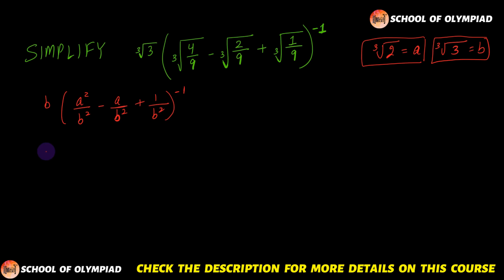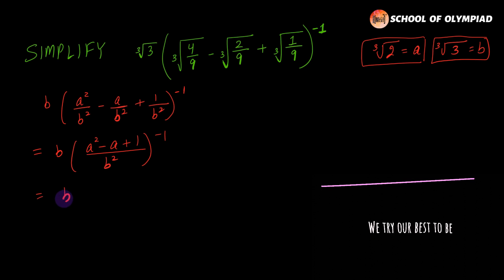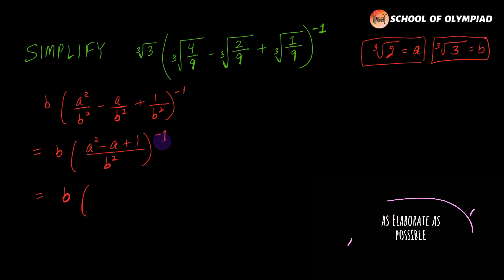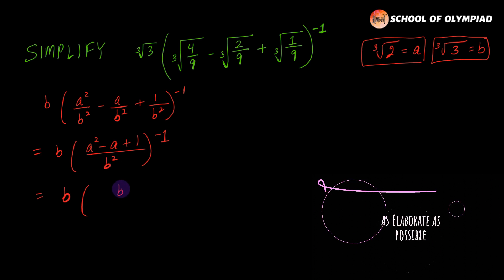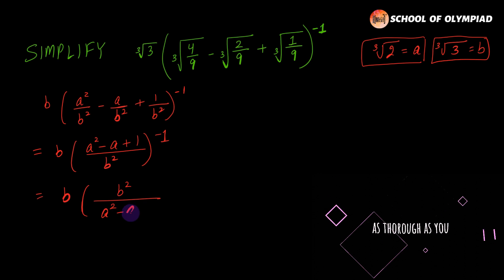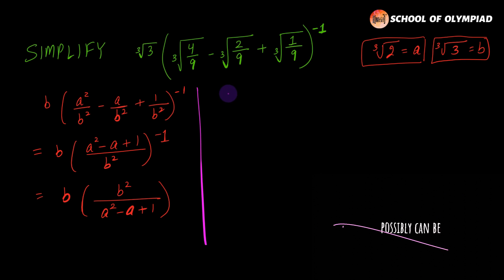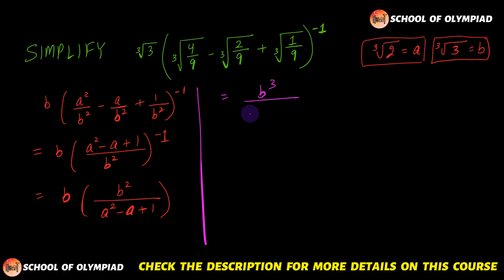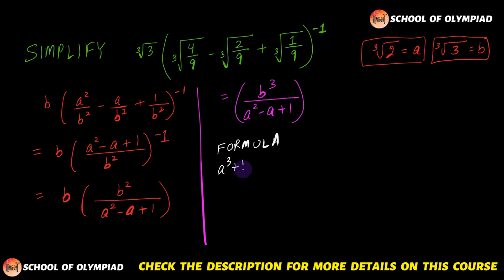Because of this minus 1 power, the numerator and denominator will interchange, and hence we get b into b²/(a² minus a plus 1). This gives us b³/(a² minus a plus 1). Now let us remember a formula that we are going to use in this expression.